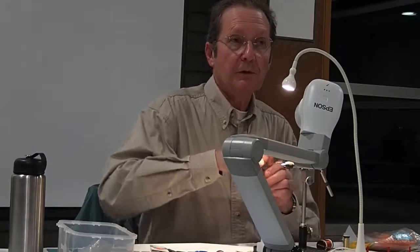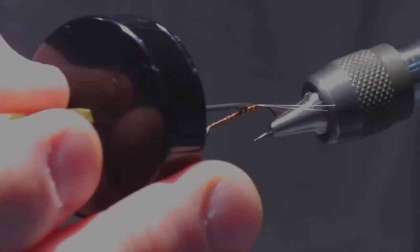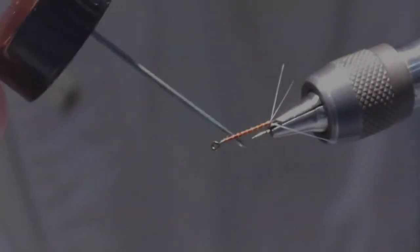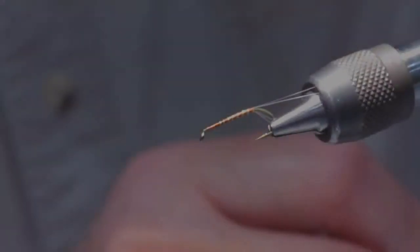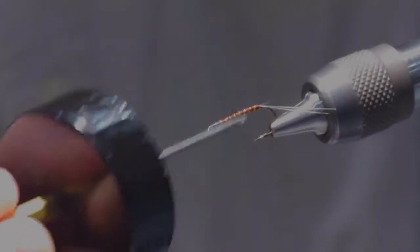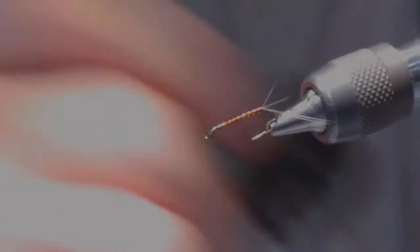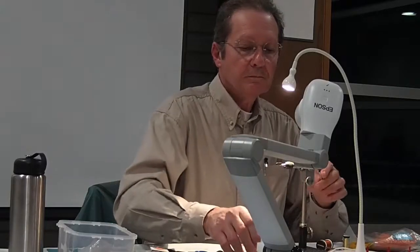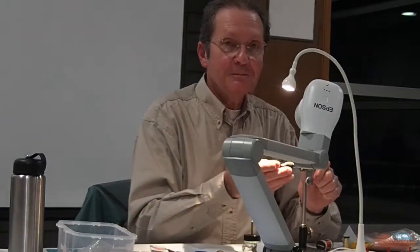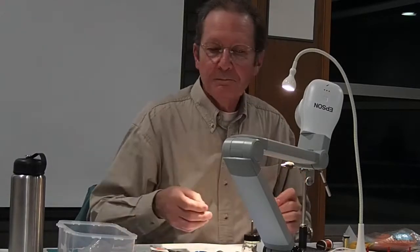And just to give it a little bit of protection and depth of color, I just take some thin head cement. And just add a little coating. Now that's just one way to separate tails. Would you like me to show you another? Because that takes a little bit of learning, but in my opinion it's the easiest way to do it.